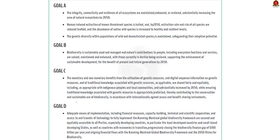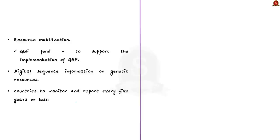Two other important outcomes are: first, the Global Environment Facility was requested to establish a special trust fund called the GBF Fund to support implementation of the GBF. Second, regarding digital sequence information on genetic resources — this information has many commercial and non-commercial applications such as pharmaceutical product development, improved crop breeding, taxonomy, and monitoring of invasive species. The GBF agreement also obligates countries to monitor and report every five years or before that, ensuring targets are tracked.